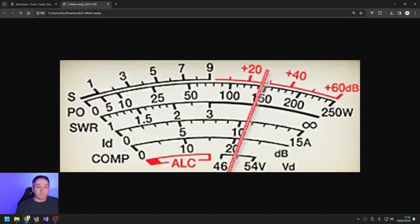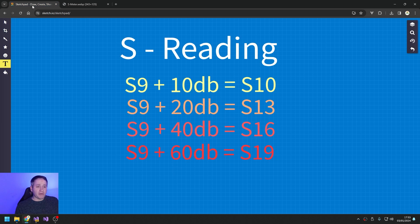I think the reason why it goes 20, 40, 60 is because once you get that far past S9, it's kind of immaterial, isn't it? It doesn't really matter, you can hear them. I assume there's a good reason why we stop at S9. I'm sure somebody will tell us in the comments. I don't know what that reason is, but I do know that these are the equivalent S meter readings if an S meter went up that far.